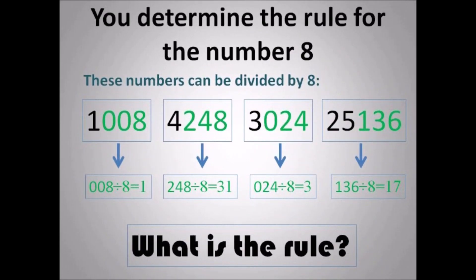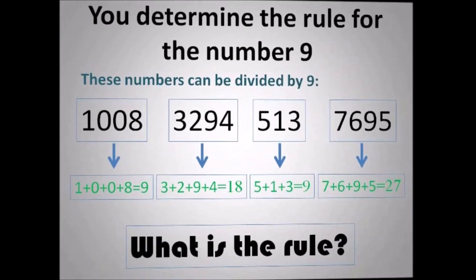Now for 8. These numbers can be divided by 8. For 1008, I highlighted the three digits at the back. And for 4048, I highlighted the three digits at the back. Notice I divided all of them by 8 and was able to do it. So these numbers can all be divided by 8. Tell me the rule depending on what I did.